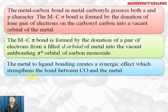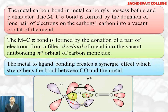The sigma bond is formed by donation of a lone pair of electrons from the carbonyl group to the vacant d orbital of the metal, whereas the pi bond is formed by donation of a pair of electrons from the d orbital of the metal into the vacant anti-bonding molecular orbital of carbon monoxide. This is the pictorial representation of bonding in metal carbonyls.